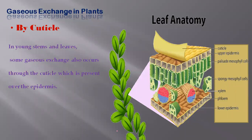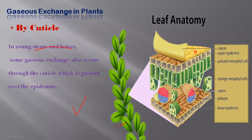The next mechanism is the cuticle. In young stems and leaves, some gas exchange also occurs through the cuticle because in young plants the cuticle is not yet thick and waxy. There is a thin cuticle on the surface of the upper epidermis, and since it is not strong and thick in young plants and leaves, gases can also pass through it.